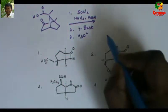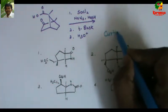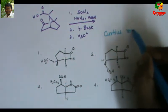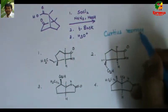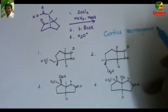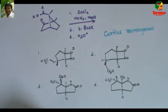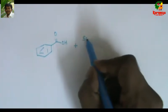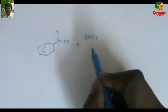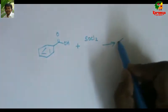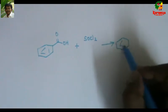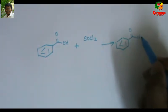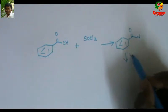In order to solve this, you should know Curtius rearrangement. What is Curtius rearrangement? In this, a carboxylic acid is treated with thionyl chloride to convert into acid chloride, then sodium azide.